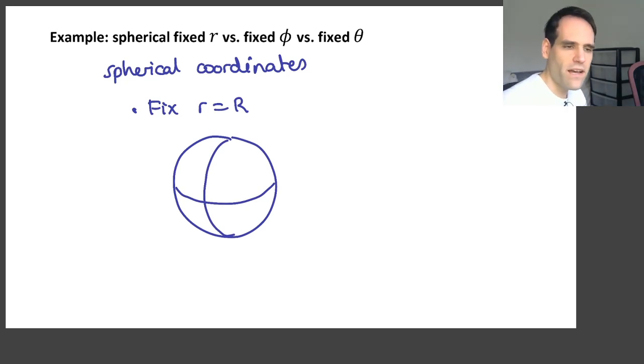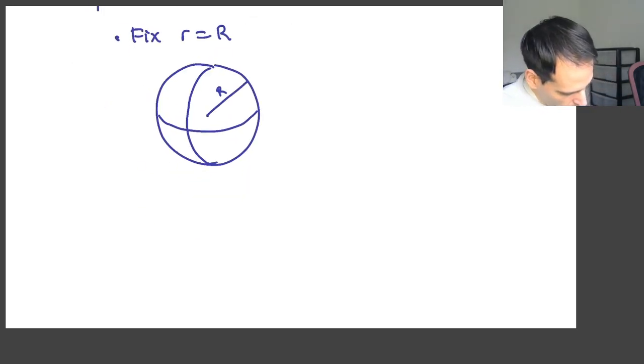But you can also fix the other two variables. Nothing is stopping you from doing that, right? So what happens? So let's say that here the parameters are θ and φ. But what happens if we fix φ and keep now as the parameters little r and θ?